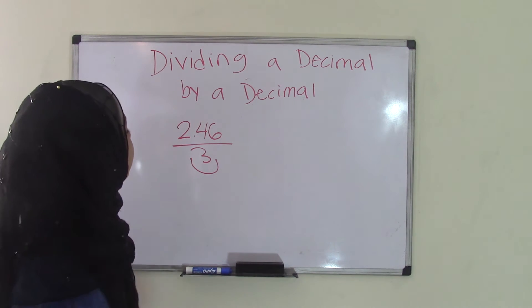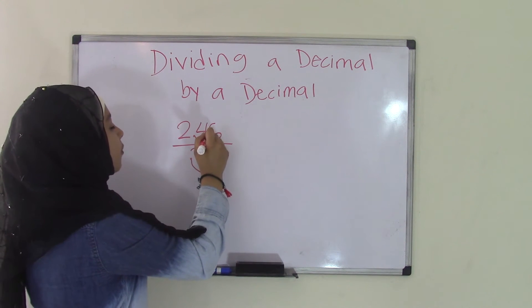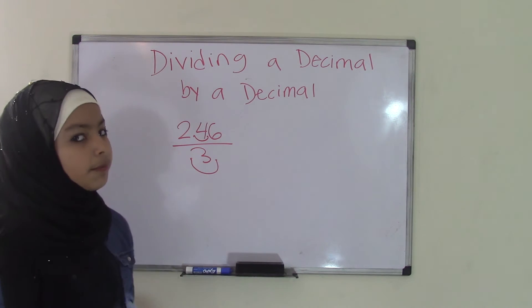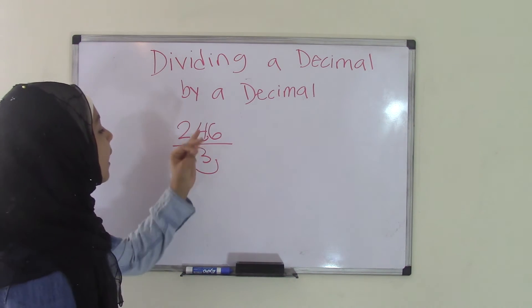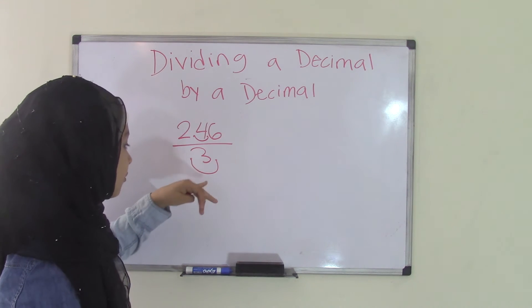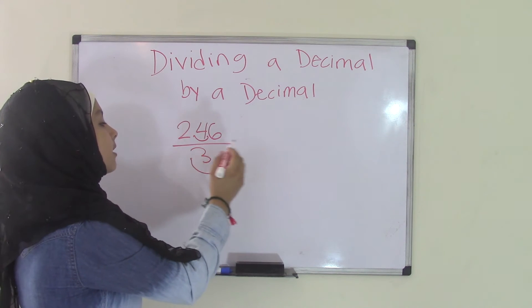But do the same thing for here. Now, if we move it one place from left to right, it becomes a 24.6. That will still remain a decimal number. Remember, we're not making the dividend into a whole number. We're just making it so that it has been through the same thing as the divisor. So that's still a decimal.